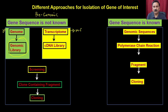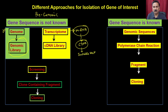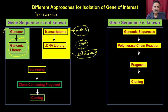You have to first isolate the messenger RNA, then from the messenger RNA prepare the cDNA, and clone that cDNA into a suitable vector to give you the cDNA library. Once you have the cDNA library, you can use it to identify the clone of your interest.